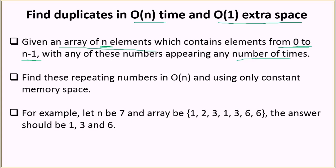The array will have some numbers which are repeating and some numbers will be missing. In this problem, we don't have to care about the missing numbers — all we need to do is find the numbers which are repeating, that is, their duplicates. We find these repeating numbers in O(n) time and using only constant memory space — we cannot use memory space of O(n), O(log n), or any complexity relative to the size of the array.